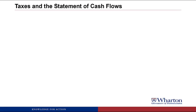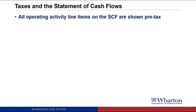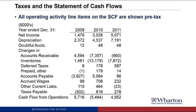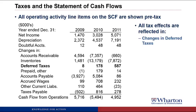When we talked about the statement of cash flows earlier in the course, we talked about how we were going to ignore taxes, and that was actually the correct approach because all operating activity line items on the statement of cash flows are shown pre-tax. Net income is after tax, but things like depreciation, the doubtful account expense, changes in accounts receivable, inventory, prepaid, payables, wages, and so forth are all shown pre-tax. We can do that because all of the tax effects are going to be reflected in two line items: one for the change in deferred taxes during the year, and another for the changes in income tax payable. Those two line items take care of all of the tax effects for the operating activities.